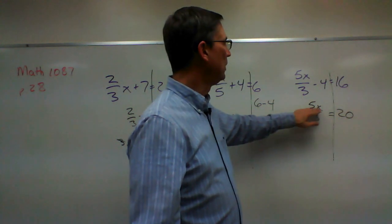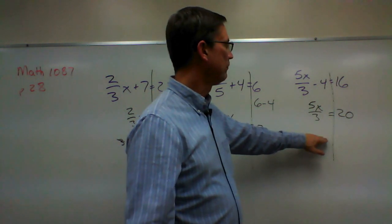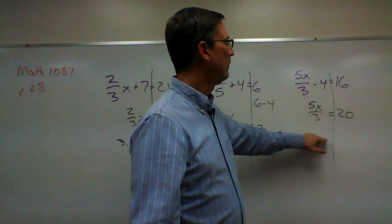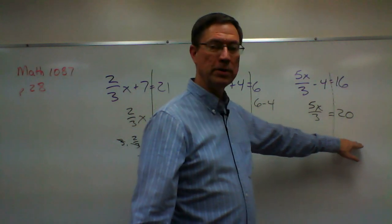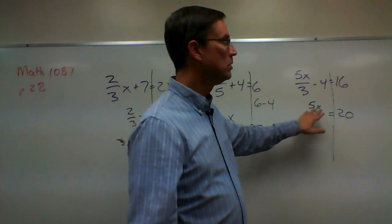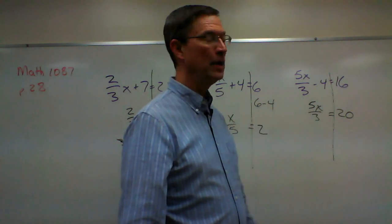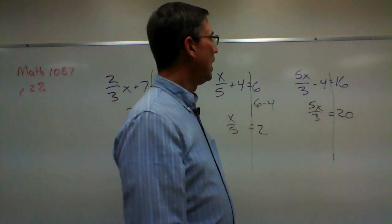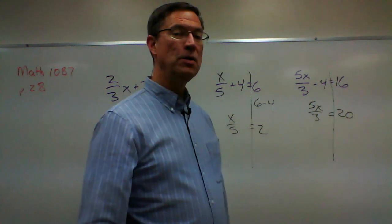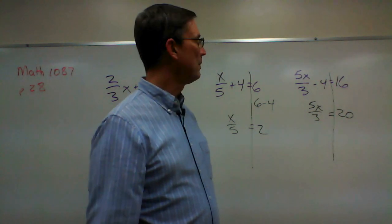Multiplying by 3 will leave just 5X, so you'll have 5X equals some number, and then the last step is to divide by 5.